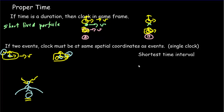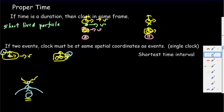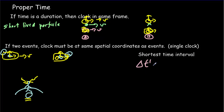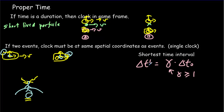This proper time is always the shortest amount of time. An observer in any other reference frame will measure a longer time between those events. So if delta-t-prime is the time measured in any other reference frame and delta-t-naught is the proper time, then they're going to differ by a factor of gamma. And gamma, remember, is a number that's bigger than one. So our time interval in any other reference frame is always bigger than the proper time.